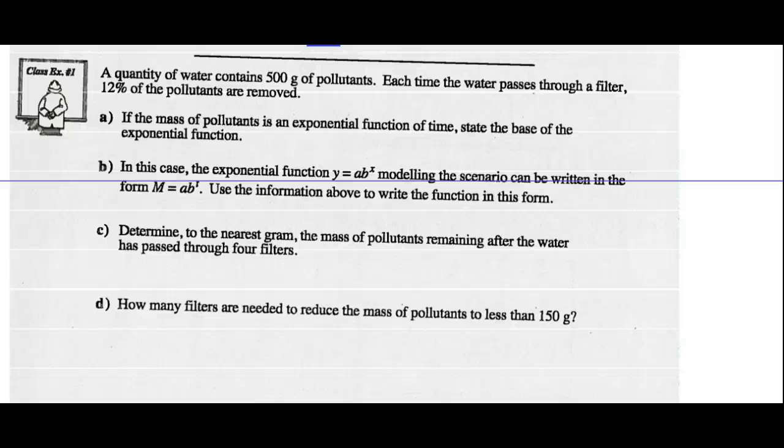Number one: A quantity of water contains 500 grams of pollutants. Each time the water passes through a filter, 12% of the pollutants are removed. If the mass of pollutants is an exponential function of time, state the base. This is a case where we start with 100% and we lose 12% every time it goes through a filter. So we're keeping 88% of the pollutants, or the base of our exponential function should be 0.88.